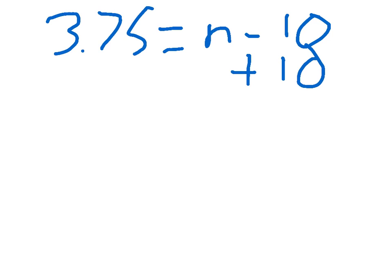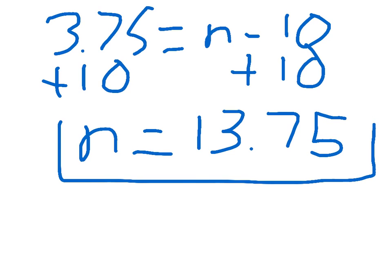Alright. So, we have 3.75 equal to n minus 10. In this case, the step we have left is to add 10 to both sides. I'm going to have n is equal to 13.75 and there goes your second equation.